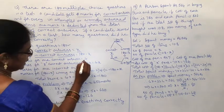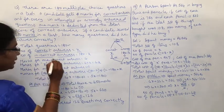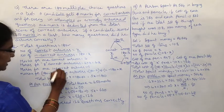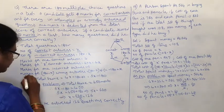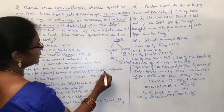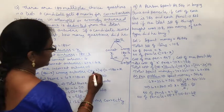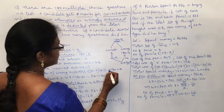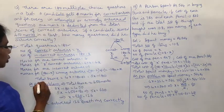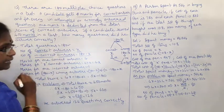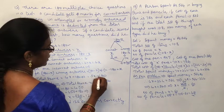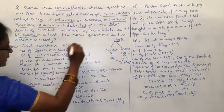Marks for 1 correct answer: 4 marks. For x correct answers: 4x marks. Marks for 1 incorrect answer: minus 1. For (180 minus x) incorrect answers: (180 minus x) into minus 1, which equals x minus 180. Total score equals correct plus incorrect marks: 4x plus (x minus 180) equals 5x minus 180.